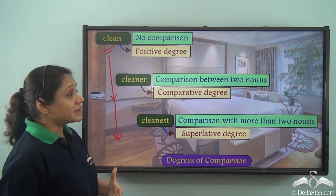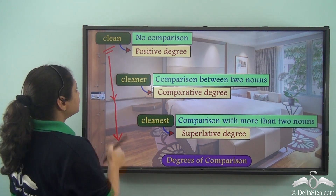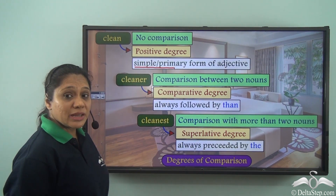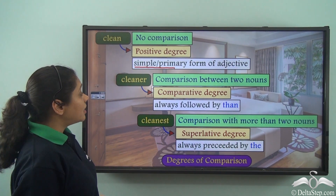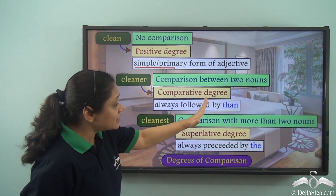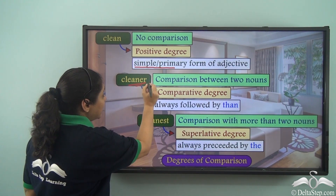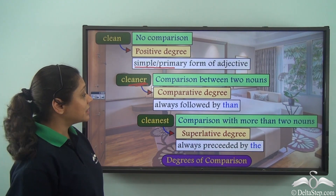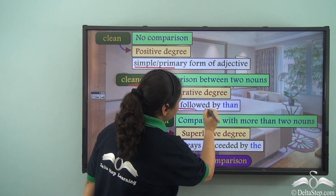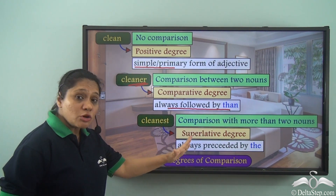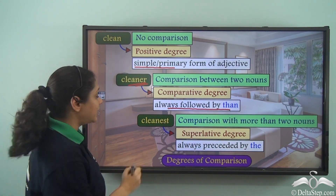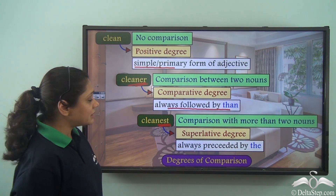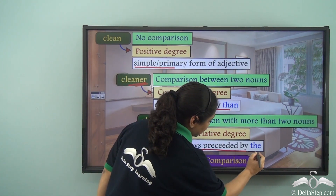In the positive degree we use the simple or primary form of the adjective, for example 'clean.' In the comparative degree we add -er to the simple form of the adjective and it is always followed by 'than.' In the superlative degree we add -est to the positive degree and it is always preceded by 'the.'